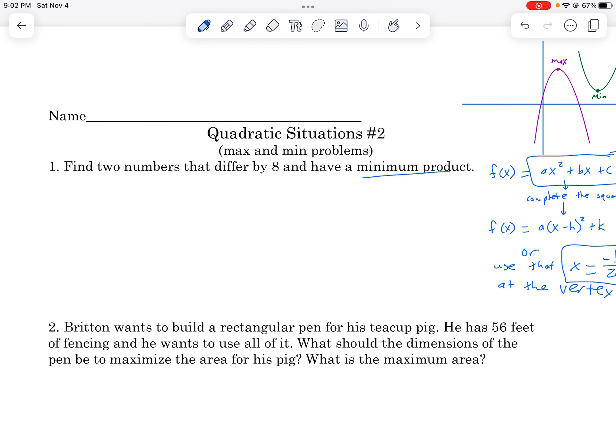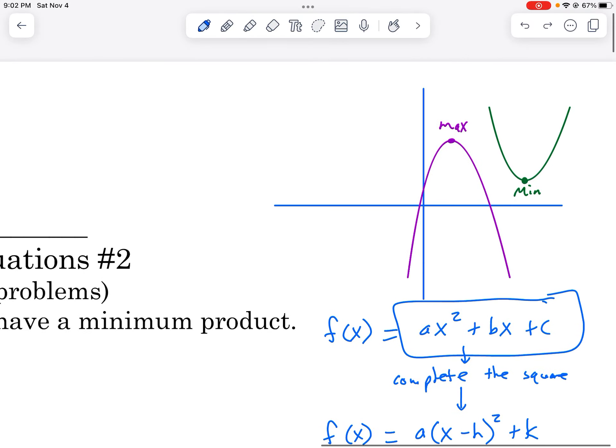If you look at them, it's saying things like minimum product, maximum area, things like that. All of these generate quadratics, which is why they're called quadratic situations.